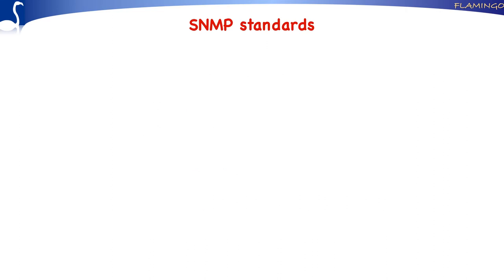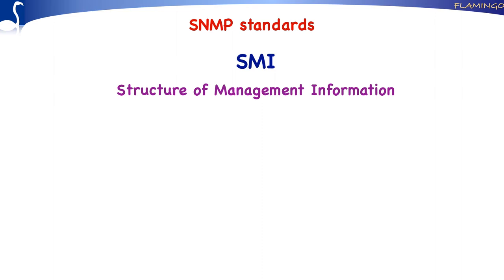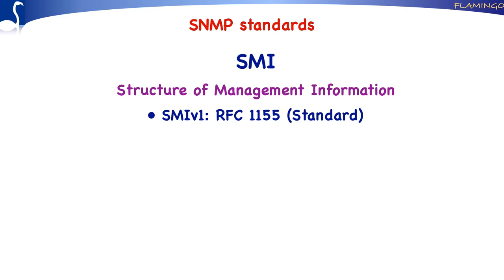The second category of Internet Management Standards are the SMI standards. SMI stands for Structure of Management Information. In fact, there are two versions of the SMI defined. SMI version 1 is defined in RFC 1155. The original MIB modules were defined according to SMI version 1.